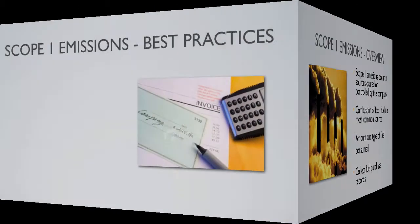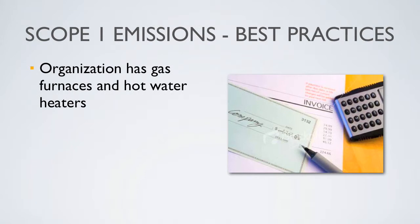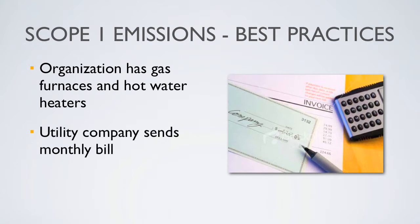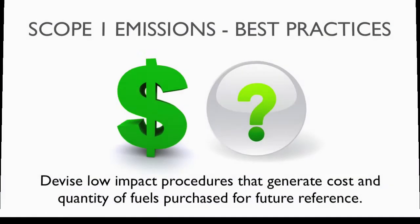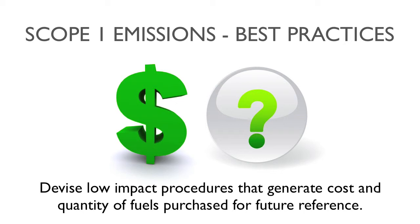For example, an organization may have gas furnaces and water heaters in their office buildings. Each month, the utility company sends a bill that states the quantity and cost of gas purchased. This information can then be recorded by the designated inventory team each month. But as mentioned before, some records may not include the quantity or type of fuel purchased. A good practice is to devise low-impact procedures that generate the cost and quantity of energy, refrigerants, and fuels purchased, and efficiently divert this information into a management system.